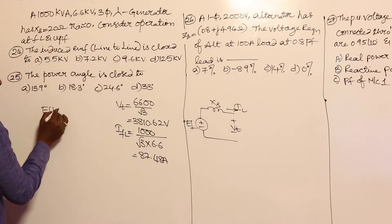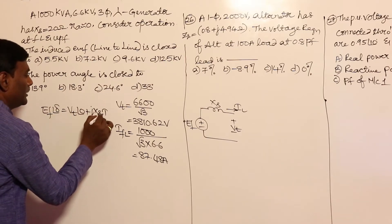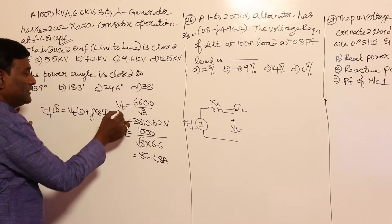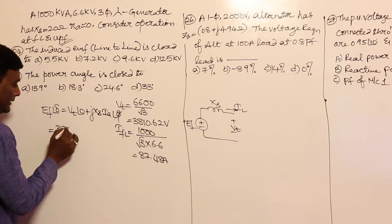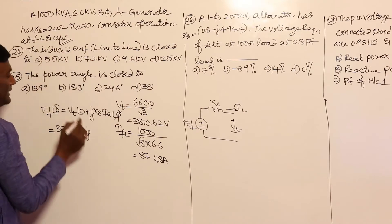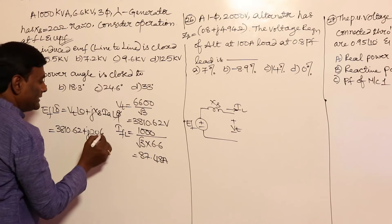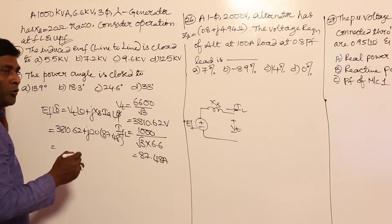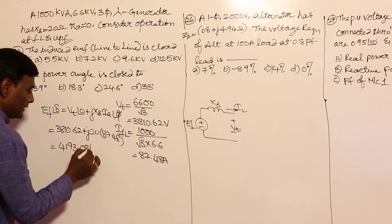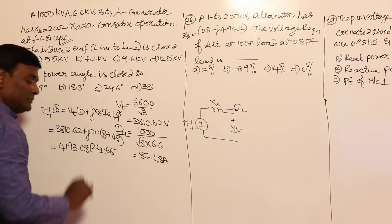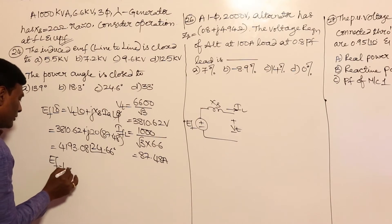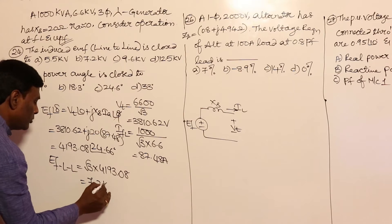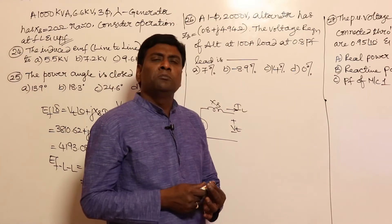Ef at angle delta equals Vt at angle zero plus j·Xs times Ia at angle zero (unity PF). So Ef equals 3810.62 plus j times 20 times 87.48 at angle zero. Calculating this gives 4193.08 volts at angle 24.66 degrees. Ef line-to-line equals root 3 times 4193.08, which comes to approximately 7.2 kV.